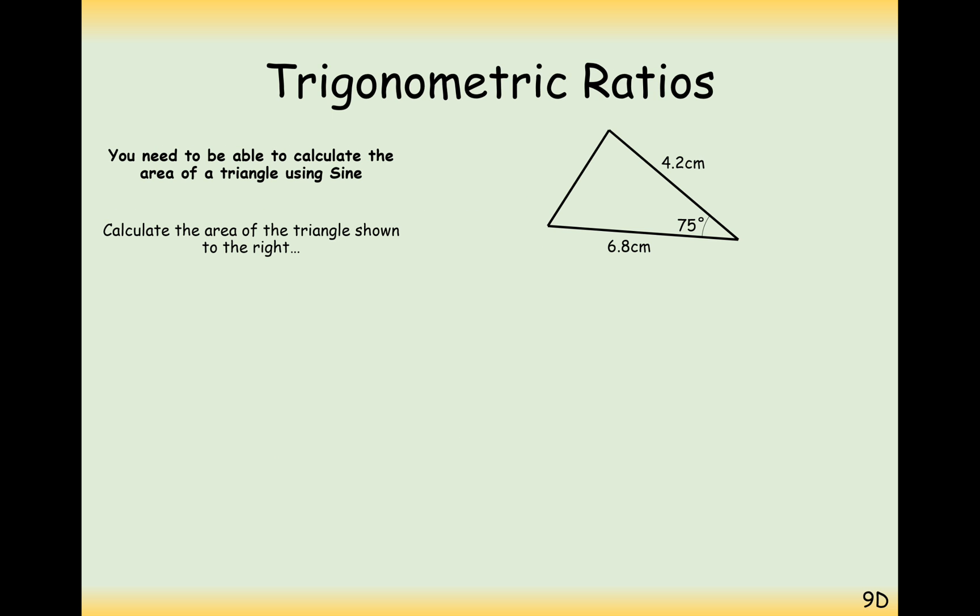We don't necessarily now need to know the perpendicular of the triangle, just two sides and its in-between angle. So the first question here is calculate the area of this triangle here, and this is just a real simple case of substitution. Make sure you label up your diagram properly. The angle has to be called C, because C is the only angle inside this formula. And we get a final answer here of 14 centimetres squared to two significant figures. Real simple there, just substitute the numbers into the formula.